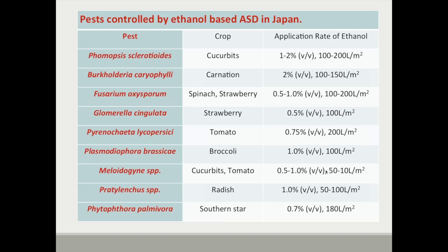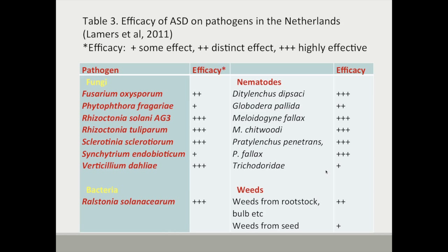In Japan, they've started using ethanol as the carbon source in many systems. This list shows the range of pests including some nematodes that are controlled by ethanol-based ASD and the crops it's been tested on. In the Netherlands, the system is a little different — it's cooler and the tarping period is usually four to six weeks. They typically use grass residues as the carbon source, and this technique has been shown to work for a range of fungal pathogens, bacteria, nematodes, and some weeds.